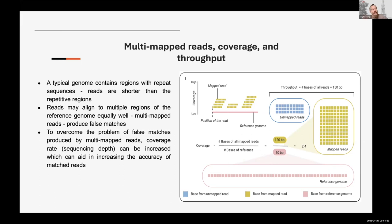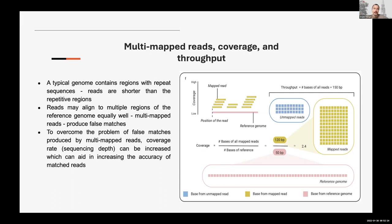If someone says they have 16x coverage, that means on average the human genome in that experiment was covered by 16 reads — it doesn't mean every single position has exactly 16, it's not a straight line. Some positions might be covered by 5 reads, some not covered at all, some by more reads. Coverage fluctuates across the genome. Another way to calculate coverage is to count the number of reads and multiply by read length — though the downside is that reads are not always exactly the same length for various reasons.